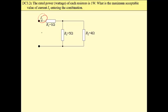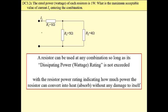Let me clarify that a resistor can be used at any combination so long as its dissipating power or wattage rating is not exceeded, with the resistor power rating indicating how much power the resistor can convert into heat without any damage.